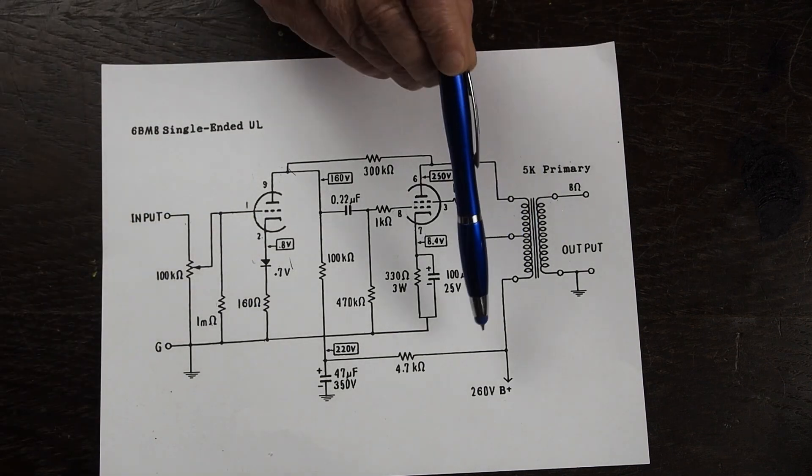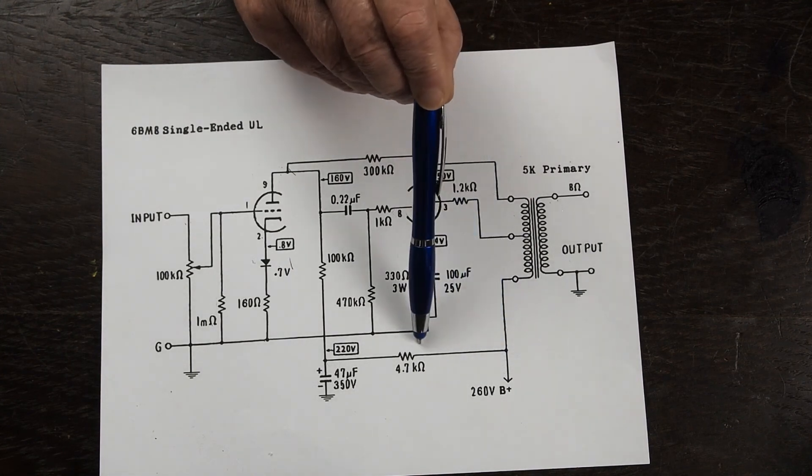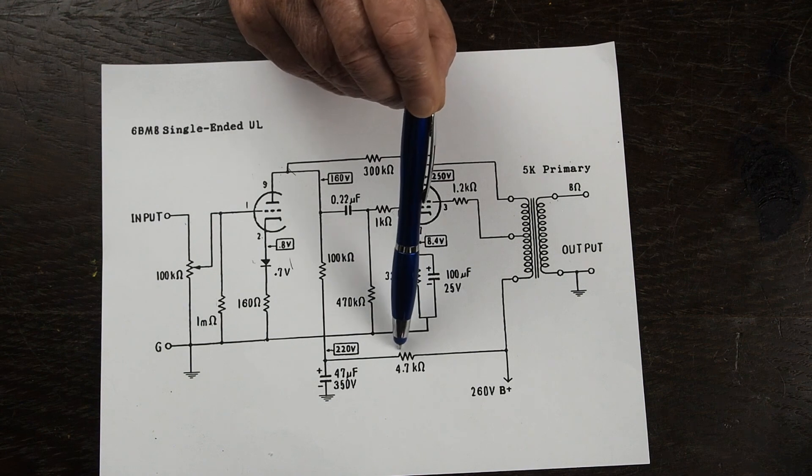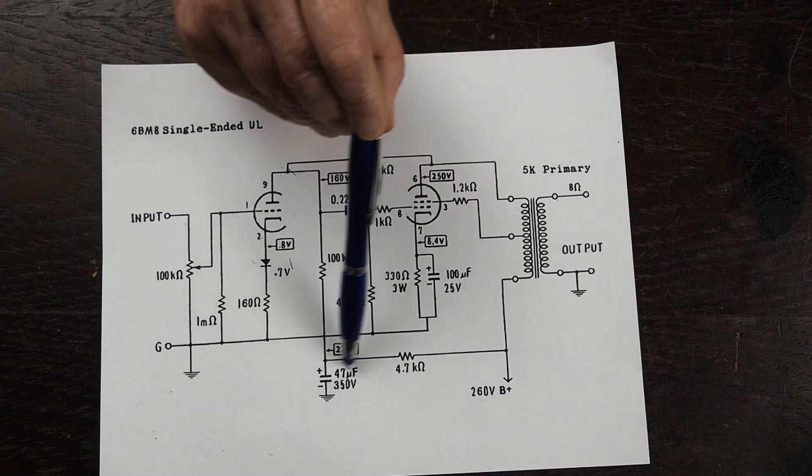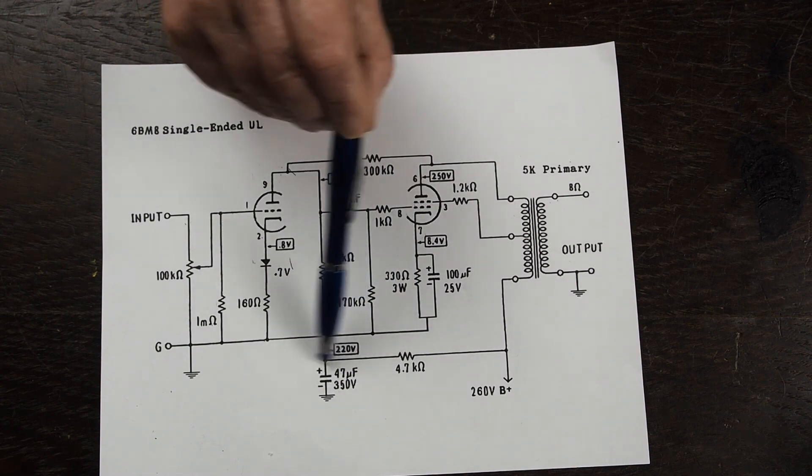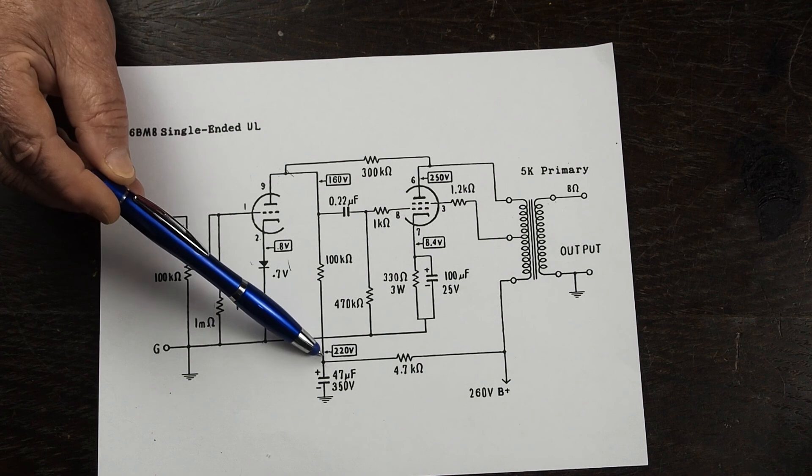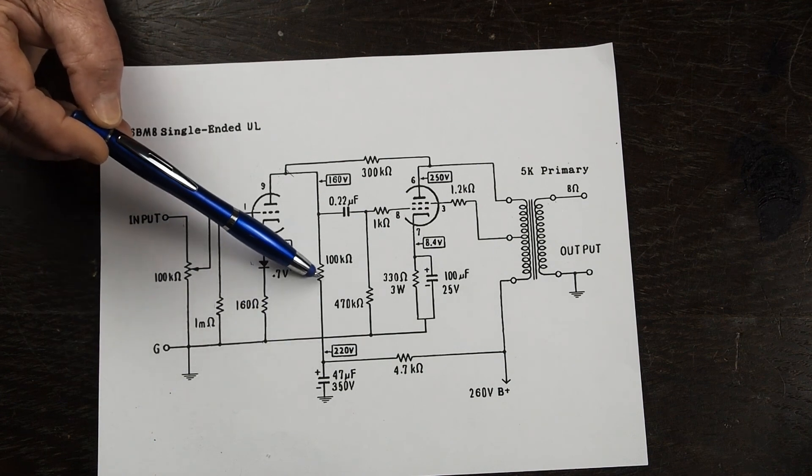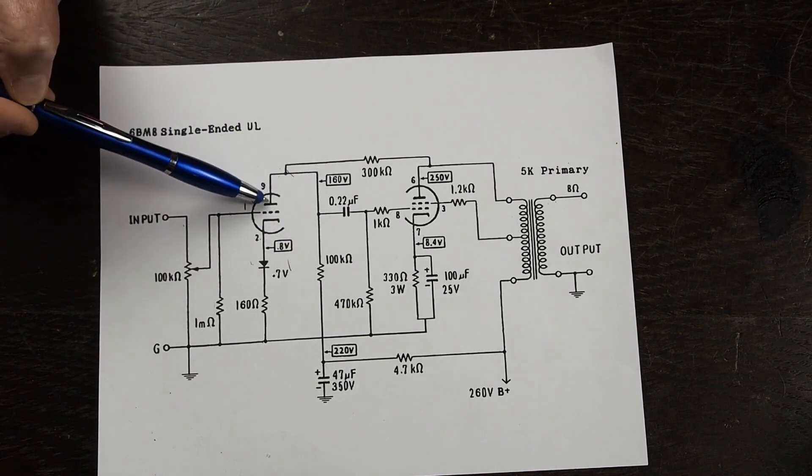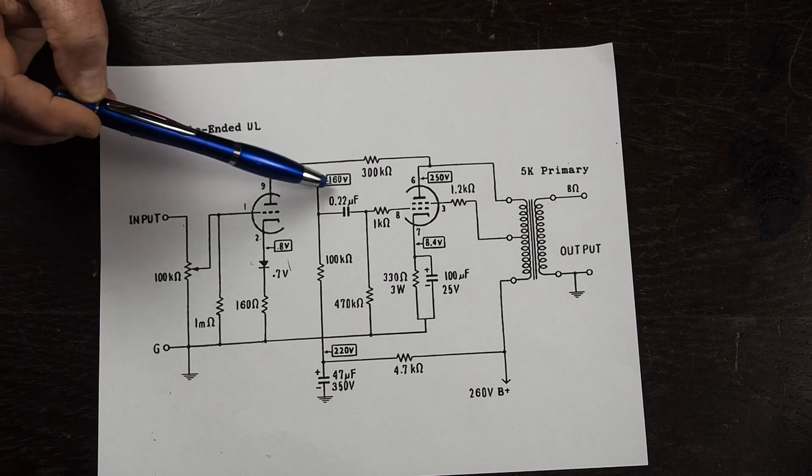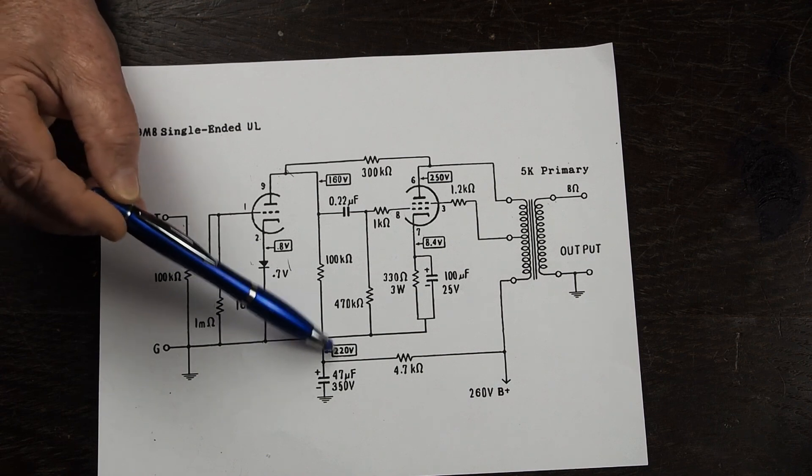On this side here is the B plus that comes up from the power supply and here's that 4.7k ohm resistor that I showed that was in the power supply and the 47 microfarad capacitor that's the storage capacitor for the driver tube. So the B plus comes up goes through this 100k plate load resistor up to the plate of the driver tube and we're looking for about 160 to 175 volts here and we've got 220 volts here.